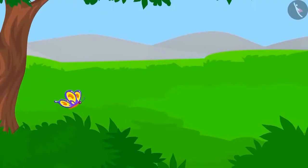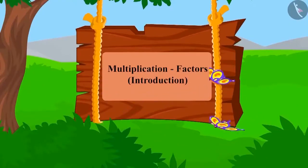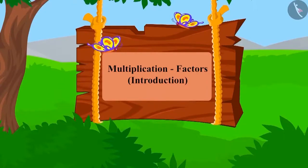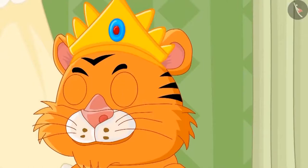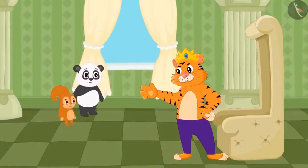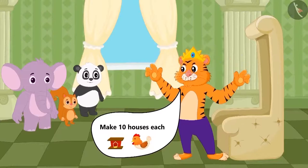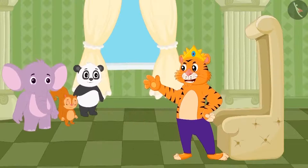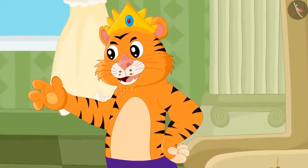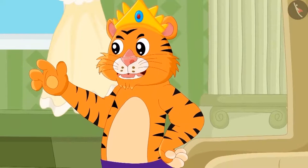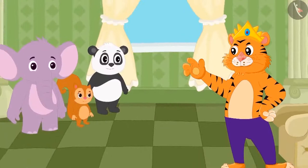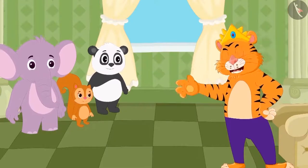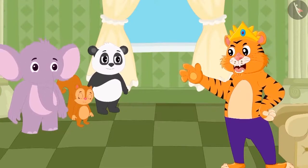Children, in this lesson we will learn about factors by multiplication. One day, the king of the jungle gave ten hens each to Golu, Chanda, and Appu and asked them to build homes for them. The condition was that all three would build different types of houses, with an equal number of hens in every row. They would get ten gold coins for building correctly.